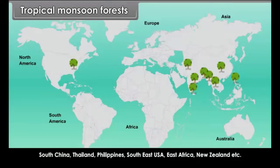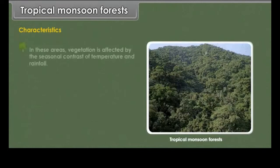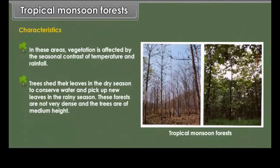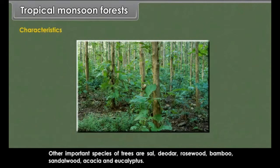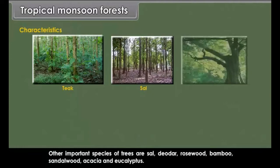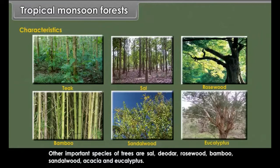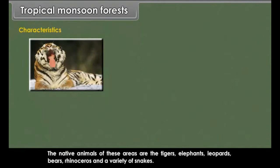Characteristics: Vegetation is affected by the seasonal contrast of temperature and rainfall. Trees shed their leaves in the dry season to conserve water and pick up new leaves in the rainy season. These forests are not very dense and the trees are of medium height. Teak is an important commercial timber. Other important species are sal, deodar, rosewood, bamboo, sandalwood, acacia and eucalyptus. Native animals include tigers, elephants, leopards, bears, rhinoceros and a variety of snakes.